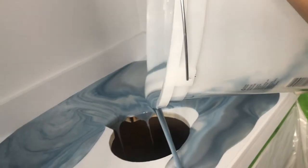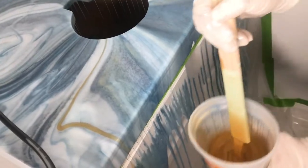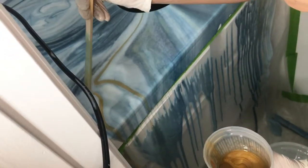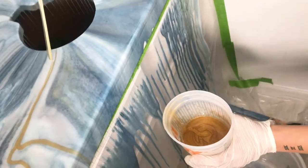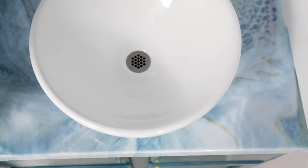Originally the countertop was a builder grade laminate. Most don't know that you can save so much time and money by using an epoxy resin over the top of your laminate. So that's exactly what I did with some blues and an accent of gold to create serenity and a panache of lash.